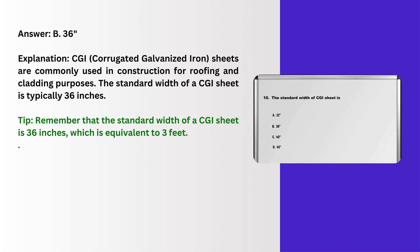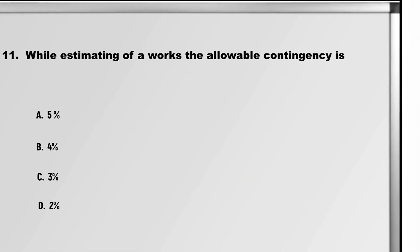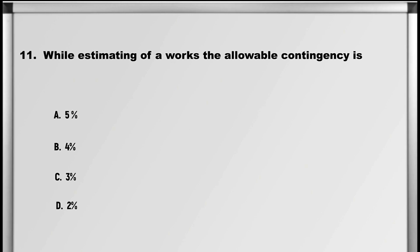Explanation: CGI (Corrugated Galvanized Iron) sheets are commonly used in construction for roofing and cladding purposes. The standard width of a CGI sheet is typically 36 inches. Tip: remember that the standard width of a CGI sheet is 36 inches, which is equivalent to 3 feet.